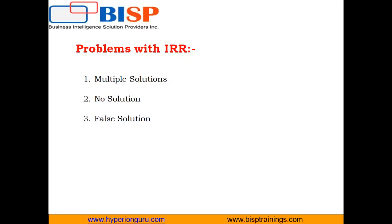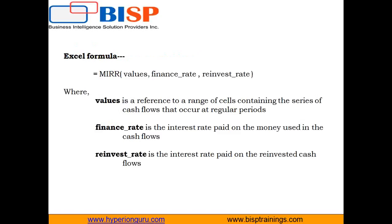For example, if cash flows at the beginning of the project are small and positive and at the end are large and negative, the IRR will necessarily need to be high to reduce the net present value of the latter cash flows. These are the problems that MIRR was developed to address. The MIRR function takes three arguments: values (a range of cells representing the series of cash flows), finance rate (the interest rate you pay on the cash flow amounts), and reinvestment rate (the interest rate you receive on cash flows as they are reinvested).